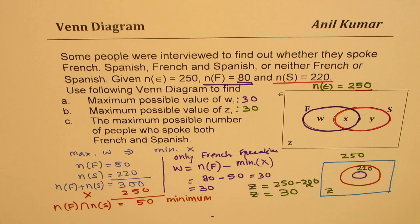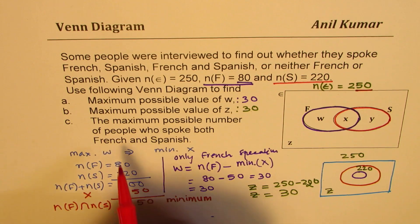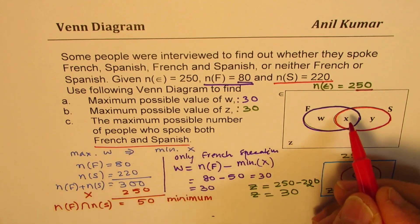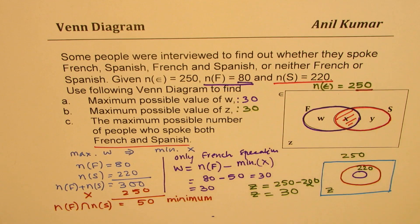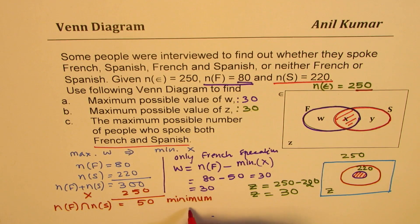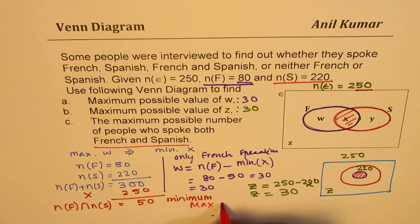Now the third question here is to figure out the maximum possible number of people who spoke both French and Spanish. That means we want to find this maximum value. Well, as we have seen here, this is the maximum value.